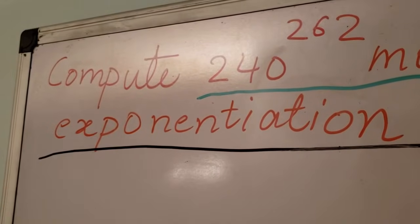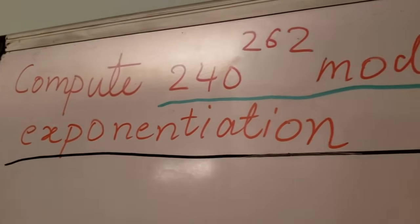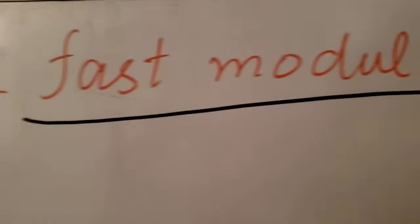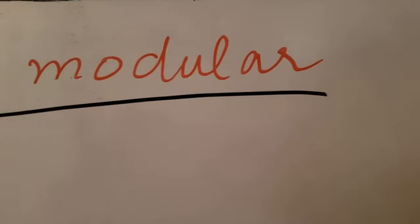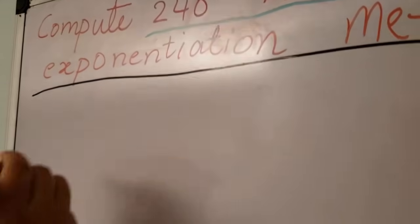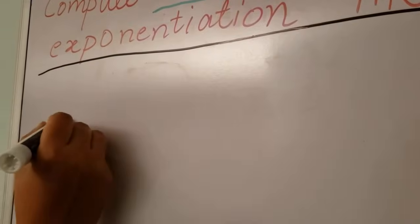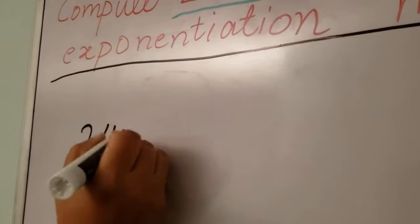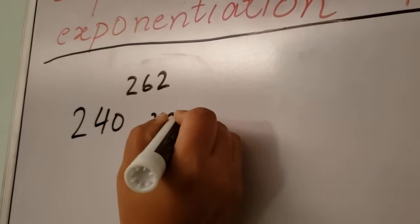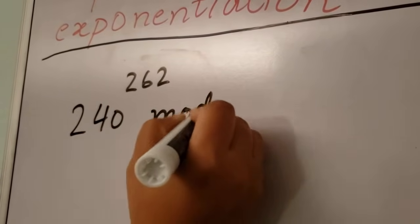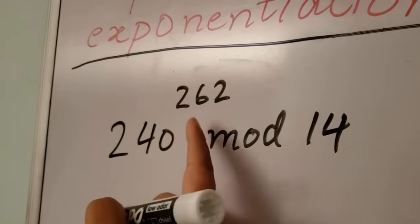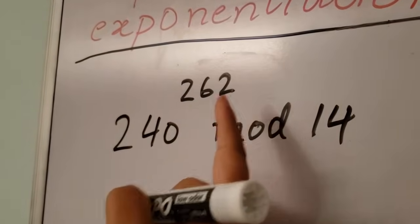Let's compute 240 to the power of 262 mod 14 using the fast modular exponentiation method. 240 is our base and 262 is our exponent.